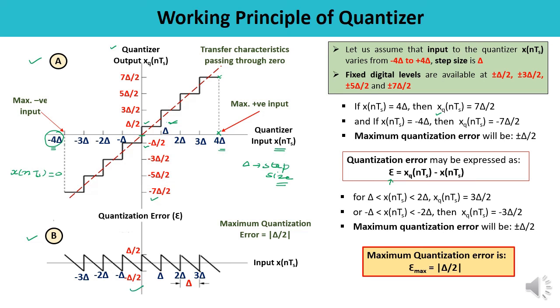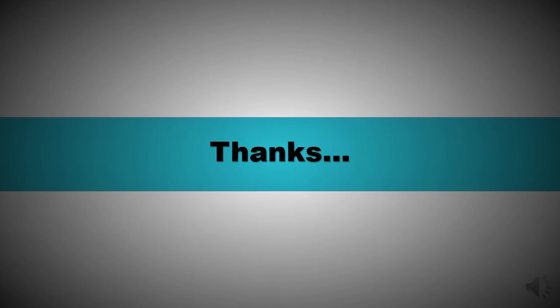In this way, you can calculate the maximum quantization error and explain the working principle. The quantization error varies from −δ/2 to +δ/2 between these values. Thank you so much for watching this video.